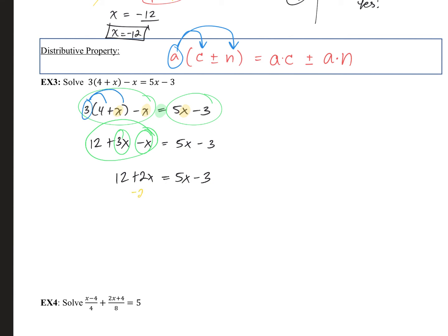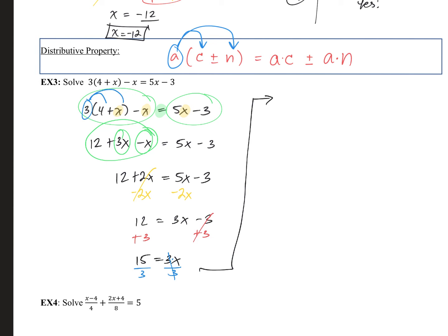Get x to one side by subtracting 2x from both sides — I prefer to keep x positive, so I move it to the right. Then add 3 to both sides to get rid of the negative 3: we end up with 15 equals 3x. Divide both sides by 3: 15 divided by 3 equals x, which is 5. So x equals 5.